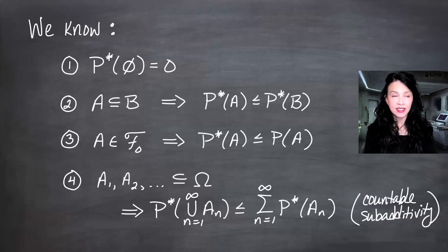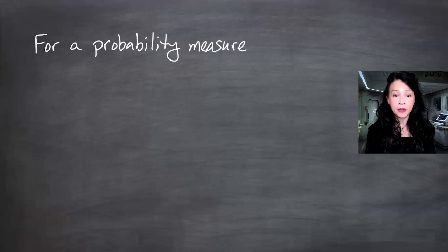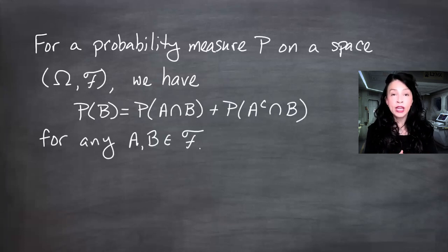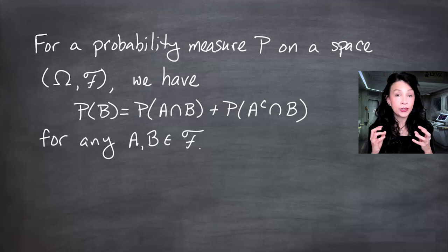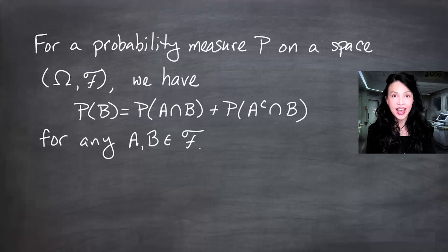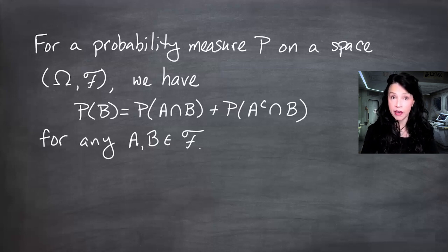We're going to go about this in a roundabout way. For a probability measure P on some space, if you have any two sets A and B in the sigma field, we can say that the probability measure of B can be written as a sum of the probability measures of two disjoint sets: A intersected with B and the complement of A intersected with B. Basically, we're breaking B into two disjoint parts based on what it shares with A and what it does not share with A. This holds for probability measures, and we're trying to show that P-star is a probability measure.